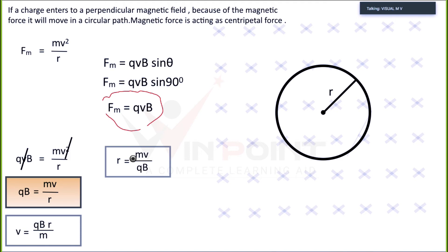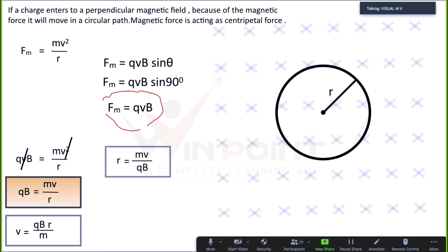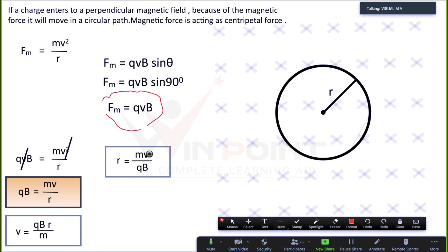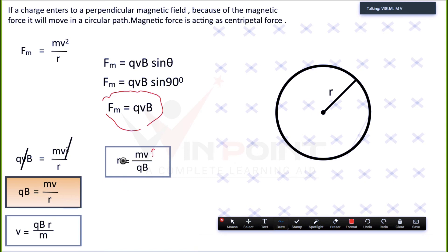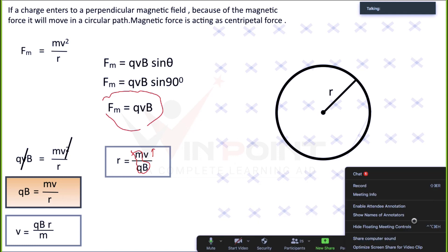If we increase the velocity of the charge, what happens to the radius of the circle? When discussing this, M, Q, and B are all considered constant. When we increase velocity, the radius will increase, since R = Mv/QB.